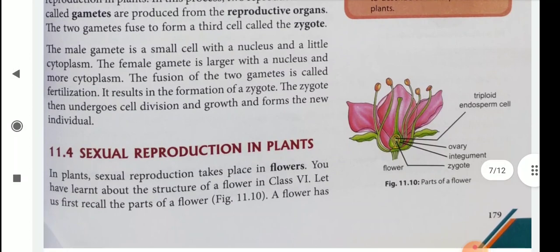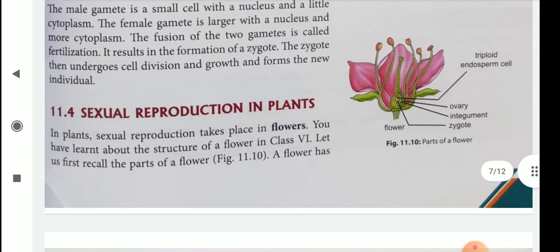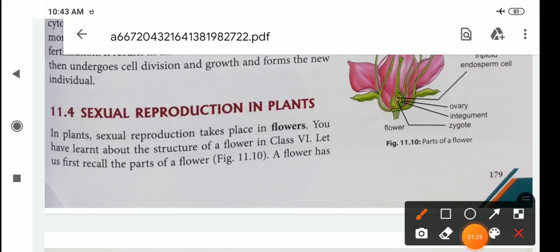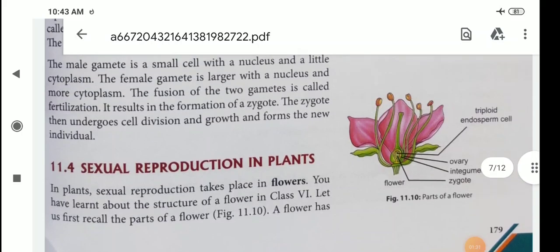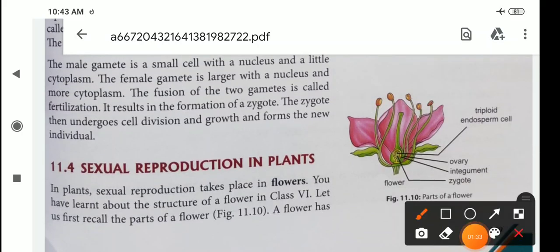Now we see sexual reproduction in plants. Here one figure is given. You see this is the ovary. In this figure you can see the ovary, integument, zygote, and triploid endosperm.